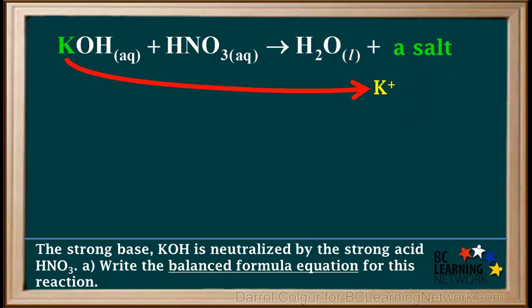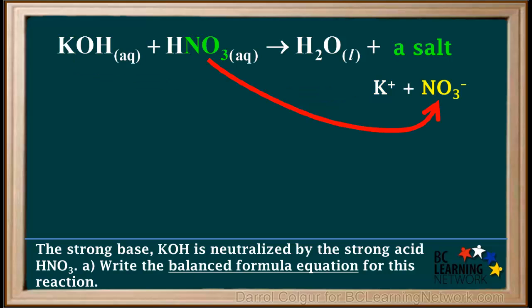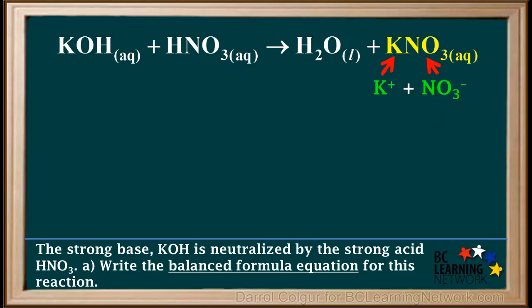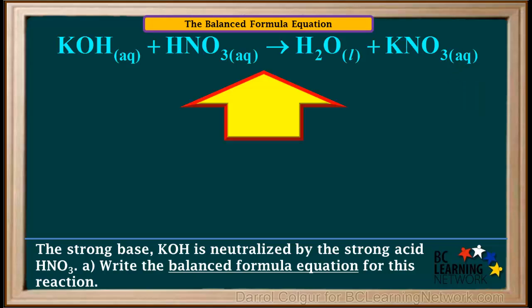One KOH supplies one K+ ion for the salt, and one HNO3 supplies one NO3− ion for the salt. Using one K+ and one NO3− gives us the formula for the salt, KNO3. KNO3, like all potassium compounds, is soluble, so we write the subscript AQ. So now we've finished the formula equation for the reaction of KOH and HNO3. Check this yourself to make sure it's balanced.